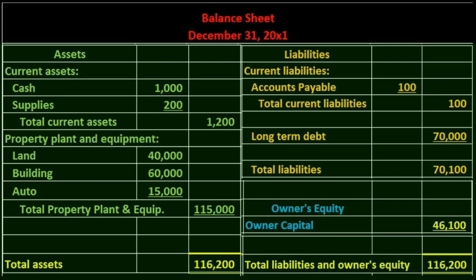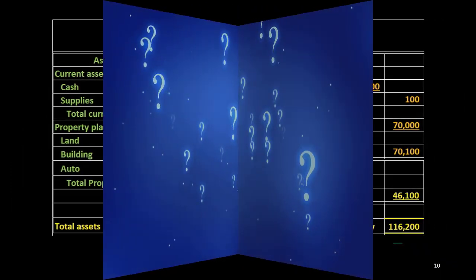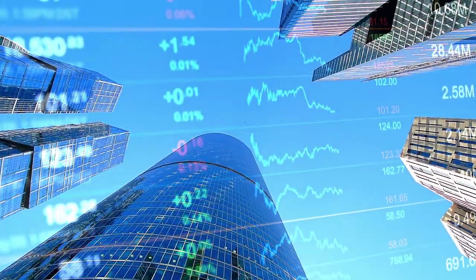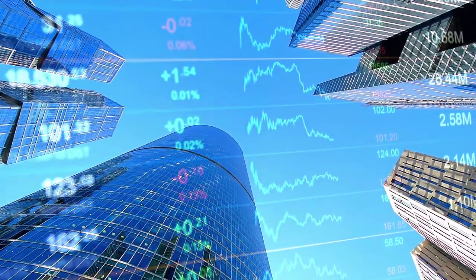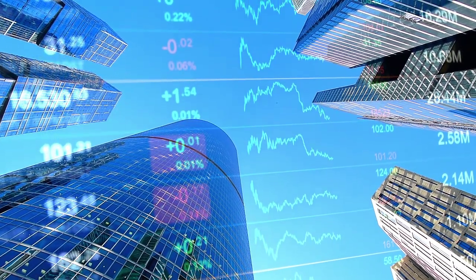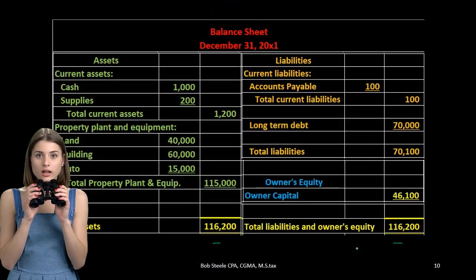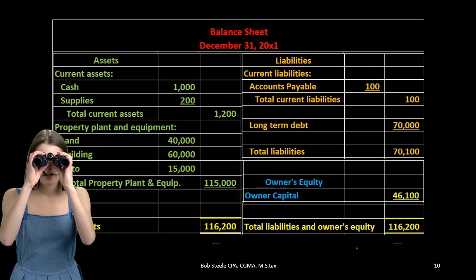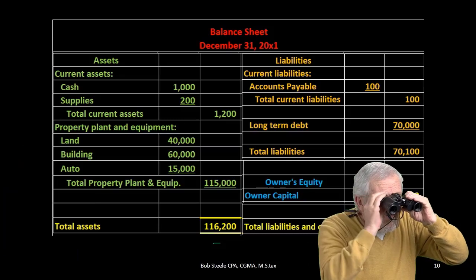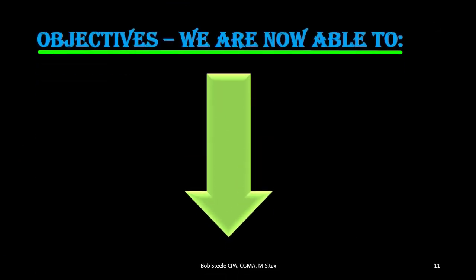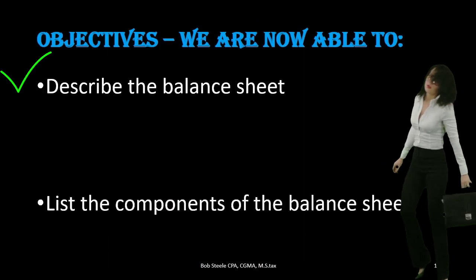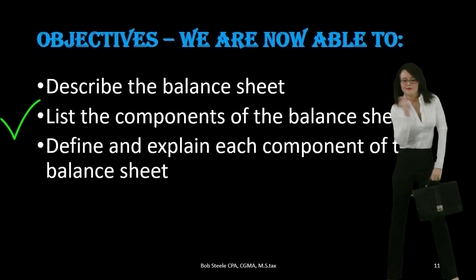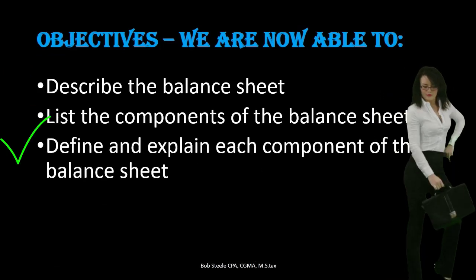A question we will address later is how the income statement and the statement of equity fit into the double-entry accounting system if the balance sheet already represents the entire accounting equation. Keep that in mind as we move to the other statements. We are now able to describe the balance sheet, list its components, and define and explain each component of the balance sheet.